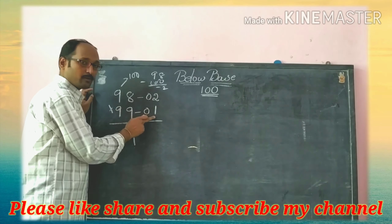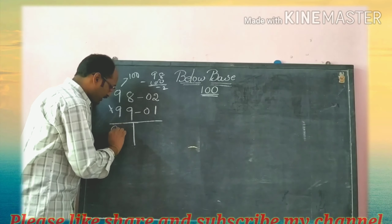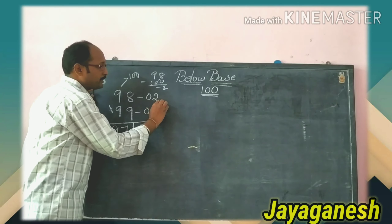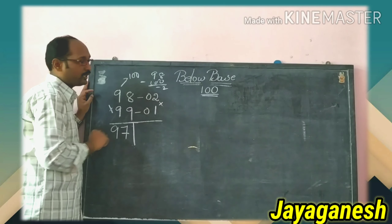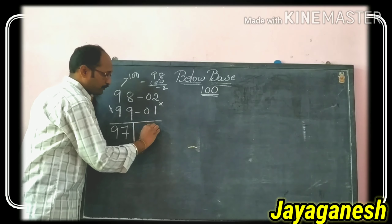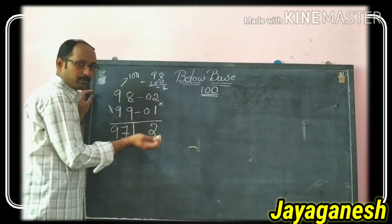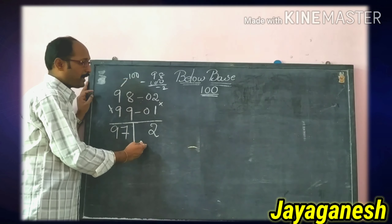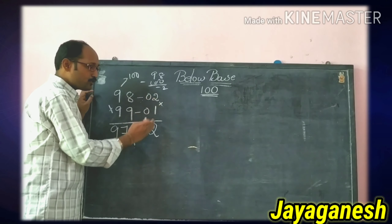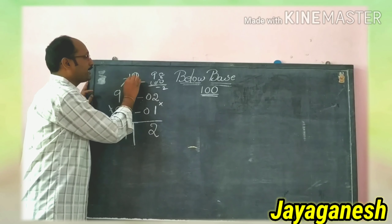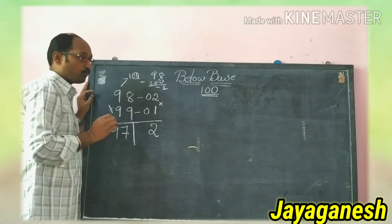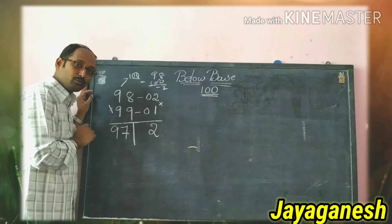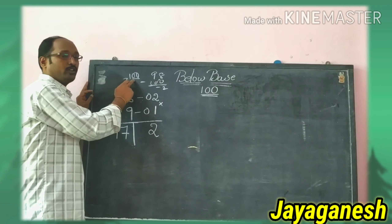98 minus 1 gives 97 — that is the left side answer. Next, multiply the differences: minus 2 into minus 1 is plus 2, so 2 ones are 2. The balancing rule should be according to the base — that is what I am going to apply now.